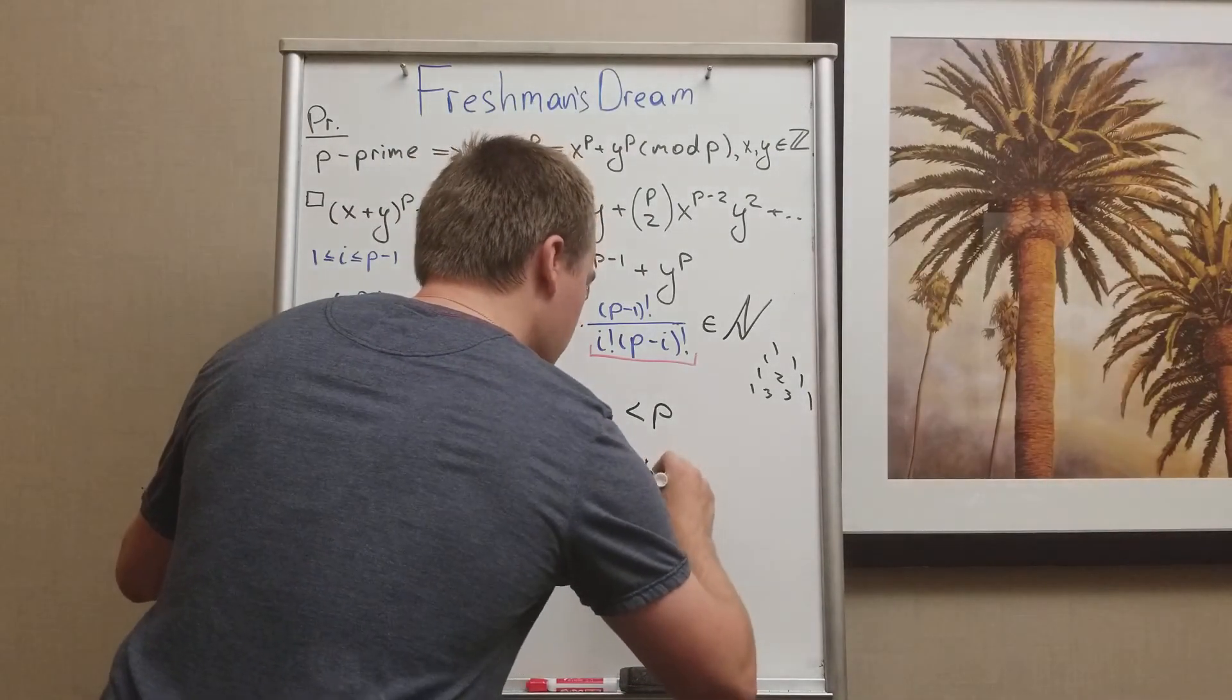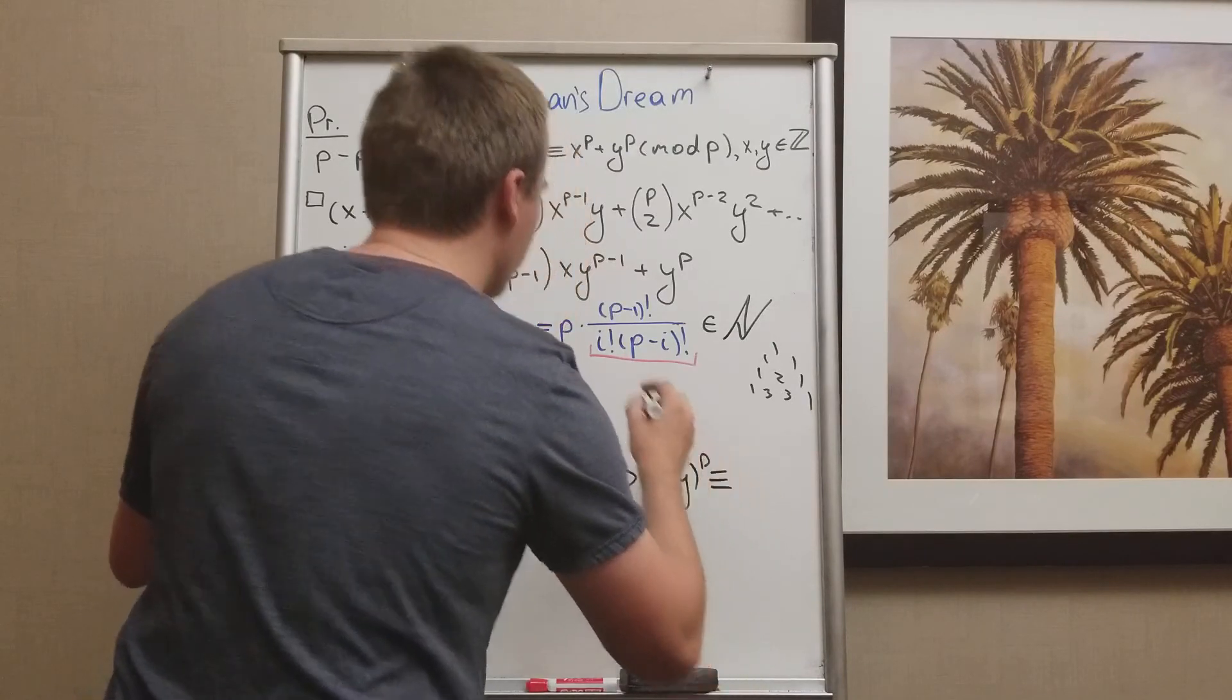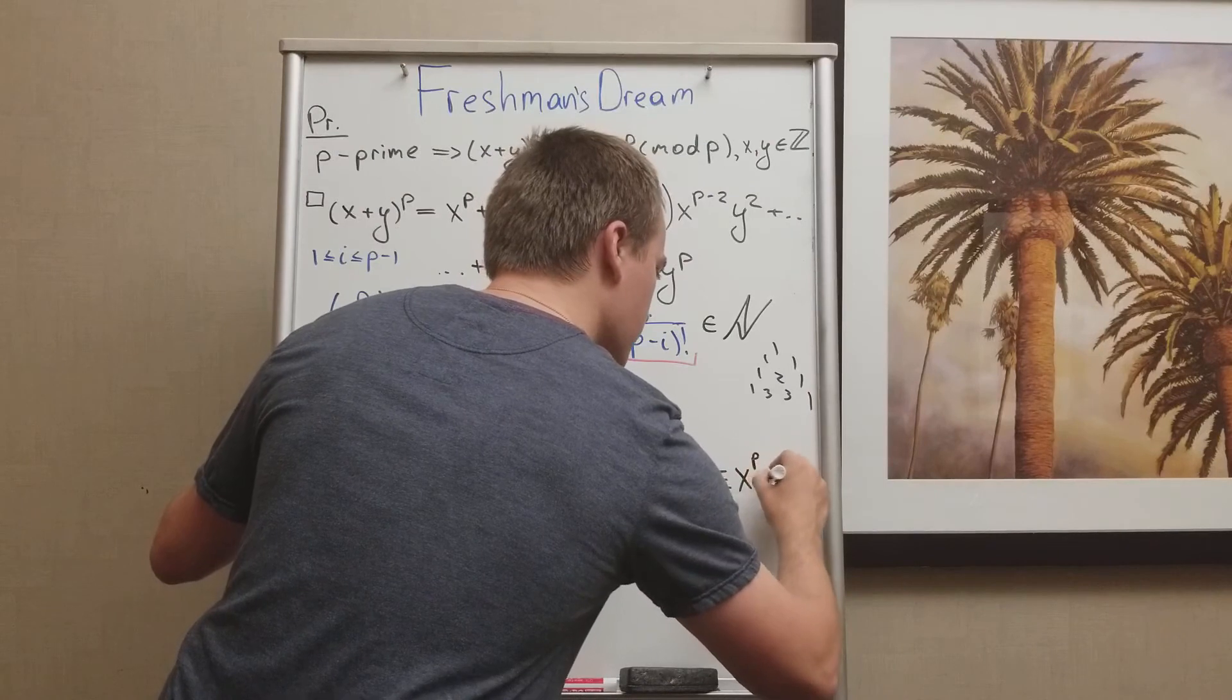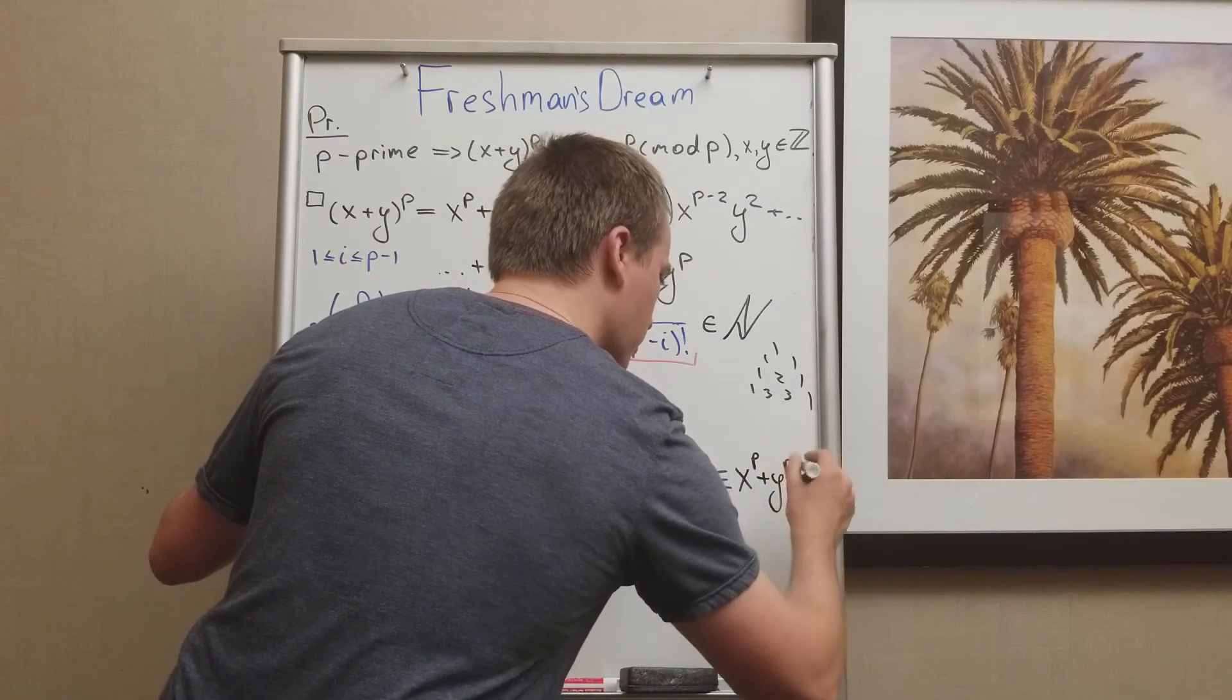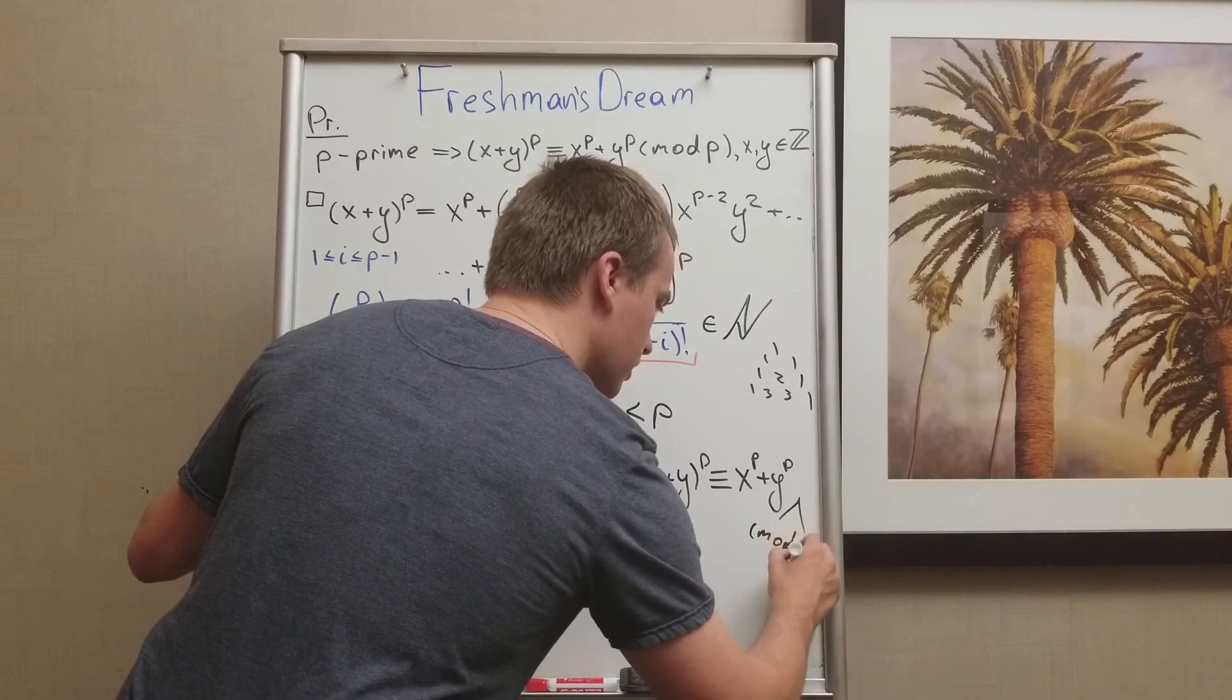So when we're going to take x plus y to the power of p, it's actually going to be congruent to x to the power of p plus y to the power of p, mod p.